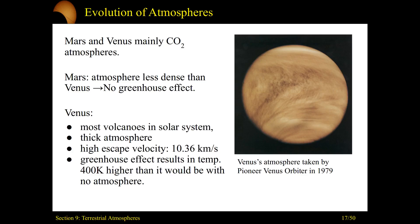The surface of Venus is essentially a boiling wasteland because of the sheer amount of greenhouse gases. Our understanding of the runaway greenhouse effect — and of a later subject, climate change — all comes from studying Venus and understanding what's going on in its atmosphere.